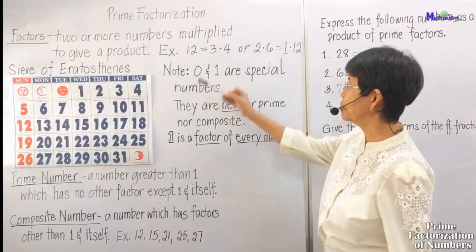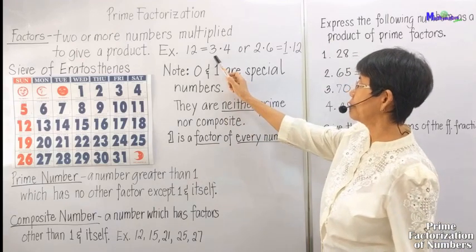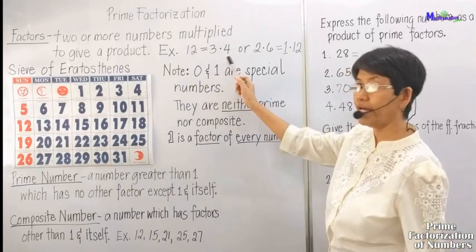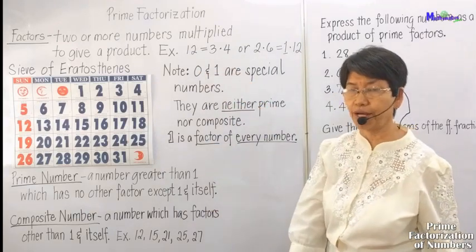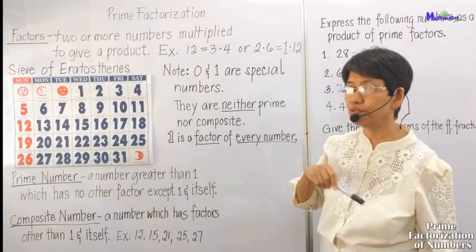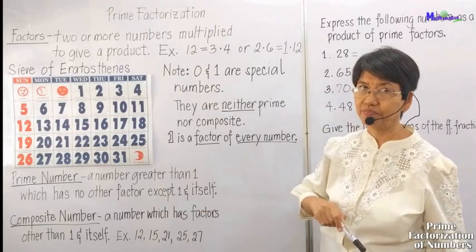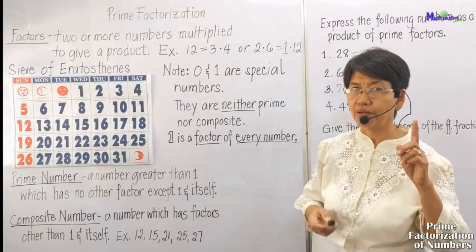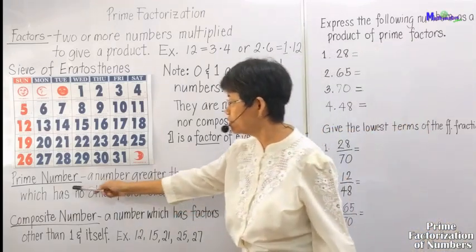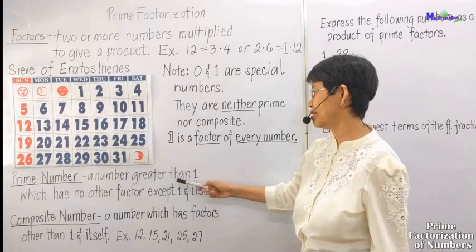For example, the number 12: if you multiply 3 times 4 it gives you 12, so 3 and 4 are factors of 12. Or 2 times 6, which also gives you 12. Or 1 times 12, because you can factor a number by 1 and itself.